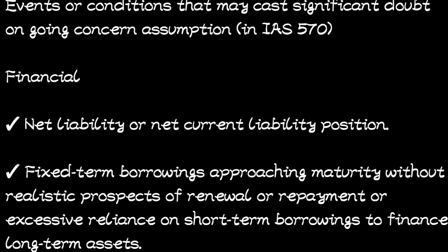Another indicator is fixed-term borrowings approaching maturity without realistic prospects of renewal or repayment, or excessive reliance on short-term borrowings to finance long-term assets. When the business has a loan but has no plan of paying or renewing it, or when it relies on short-term borrowings to buy business assets, that is a condition showing it may have problems continuing operations.